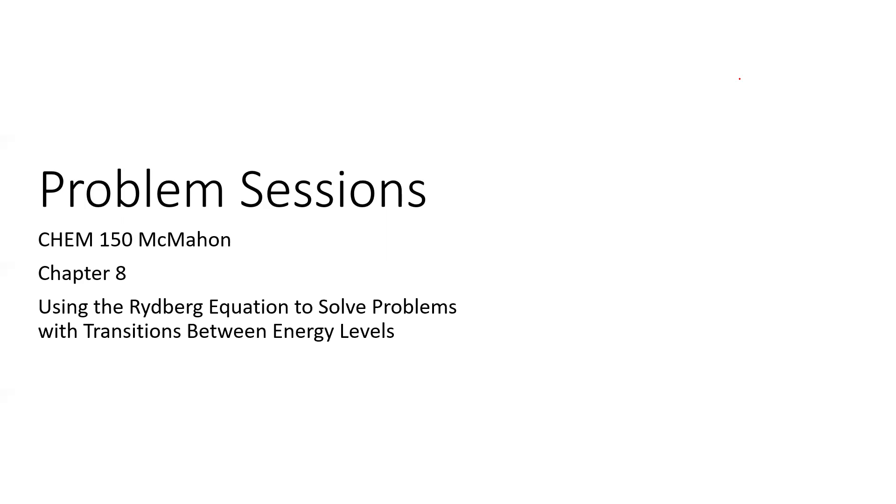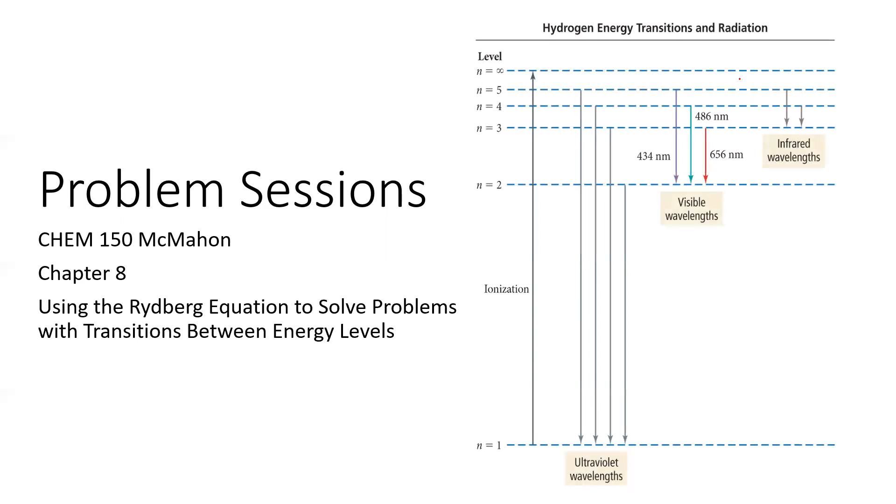This particular problem is going to use Rydberg's equation that we used for the Bohr model in line emission spectroscopy to solve for transitions between energy levels. We've seen examples of electrons falling all the way down to the energy level of one in the case of hydrogen, and that would result in an emission of light from the ultraviolet region. That's part of the Lyman series.